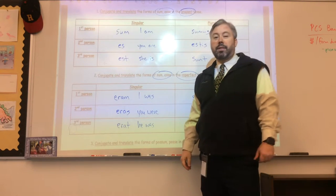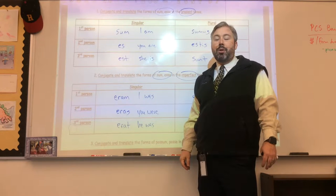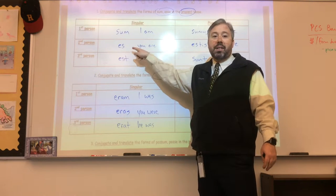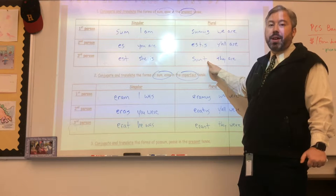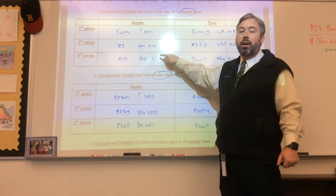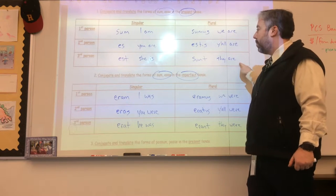Now that you've unpaused this, you can see the answers. You have the present tense of to be, which is sum, es, est, sumus, estis, sunt. It's all review, which is nice. You also remember that it means I am, you are, she is, we are, y'all are, they are.